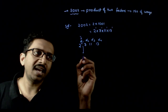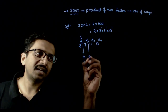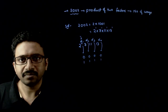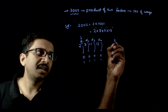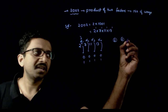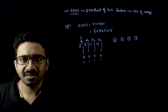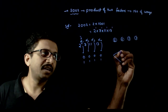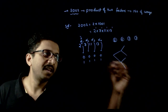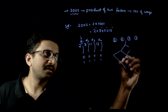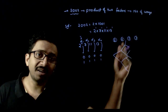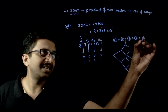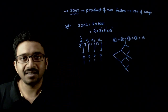Alpha 1 can take any value either 0 or 1; alpha 2 can take 0 or 1; alpha 3 can take 0 or 1; alpha 4 can take 0 or 1. So alpha 1 has two options, alpha 2 has two options, alpha 3 has two options, and alpha 4 has two options. Alpha 1 can be filled in 2 ways, alpha 2 in 2 ways, alpha 3 in 2 ways, and alpha 4 in 2 ways — giving a total of 16 ways. So there are a total of 16 factors of 2002.